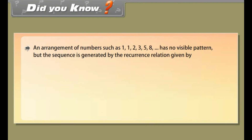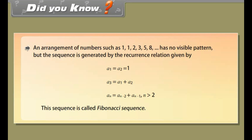Did you know? An arrangement of numbers such as 1, 1, 2, 3, 5, 8, and so on has no visible pattern, but the sequence is generated by the recurrence relation: a1 = a2 = 1, a3 = a1 + a2, an = a(n−2) + a(n−1) for n > 2. This sequence is called the Fibonacci sequence.